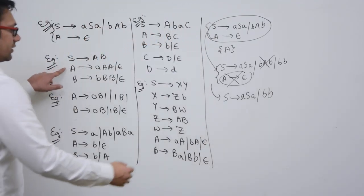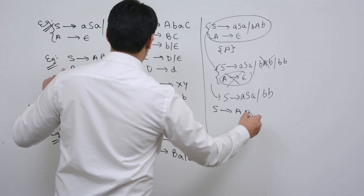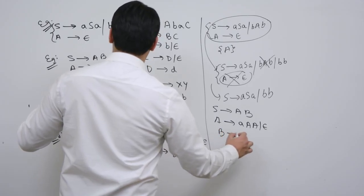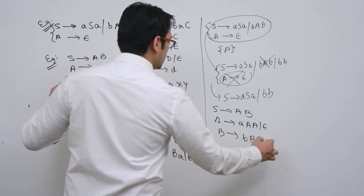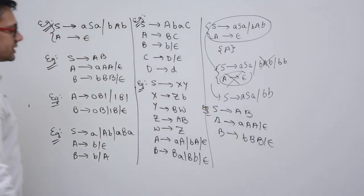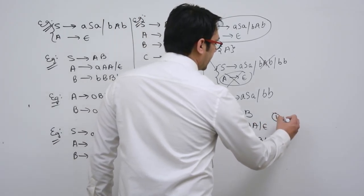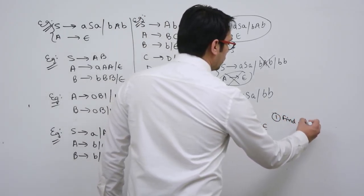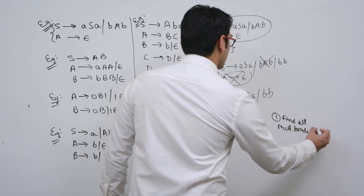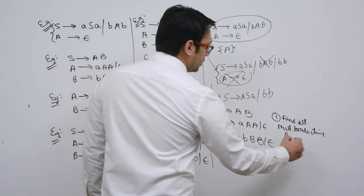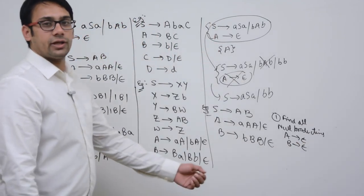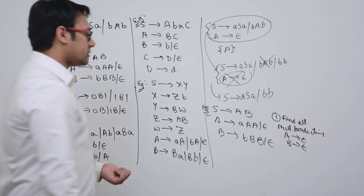Now let me take the second example. The second grammar is: S derives A B, A derives A A A | epsilon, B derives B B B | epsilon. The first step is to find all null productions.